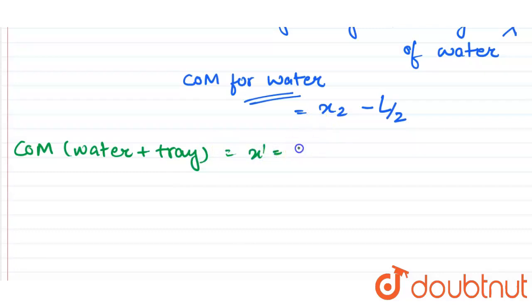equals small m x2 minus L by 2 plus capital M x1 upon small m plus capital M.